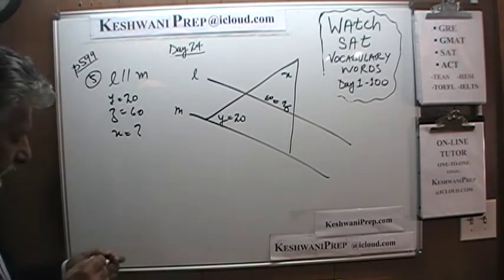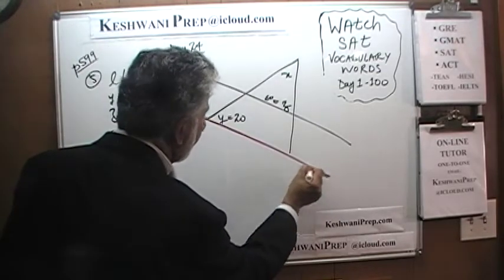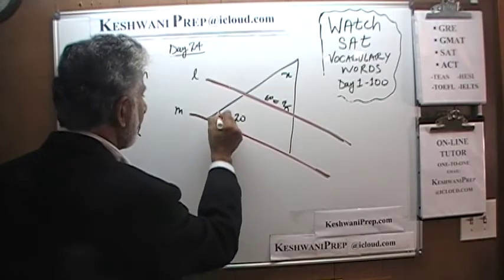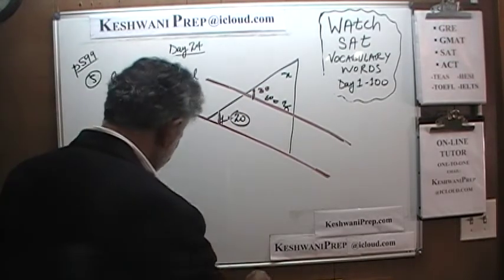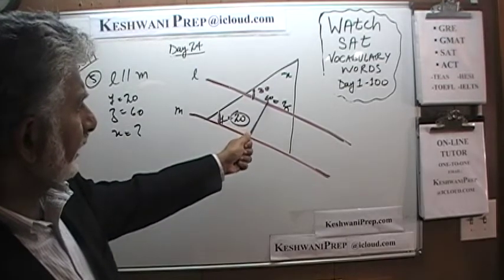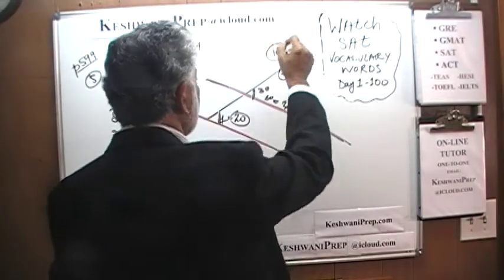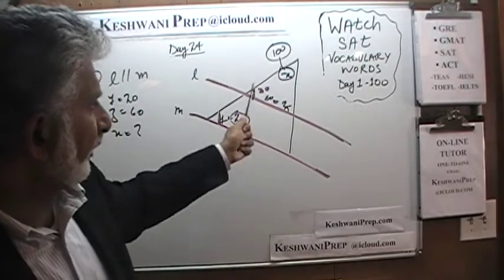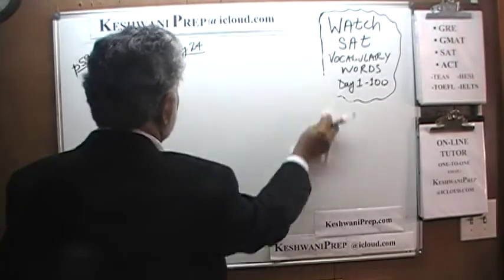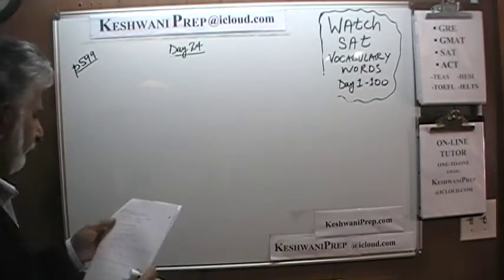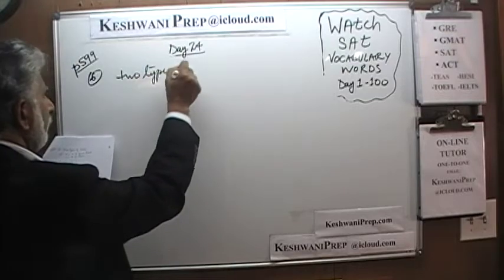The concept being tested is that if the two lines m and l are parallel, then the alternate interior angles are equal. Since y is 20, the corresponding angle in the triangle is also 20. We want x: 20 plus 60 equals 80, therefore x must be 100, because all angles in the triangle must add up to 180.